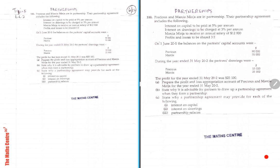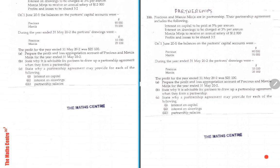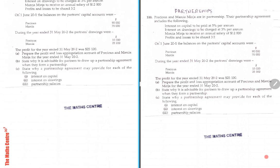What do they want? They tell you that the profit for the year is $25,100. Prepare the profit and loss appropriation account for both partners for the year ended 31st of May 2002.